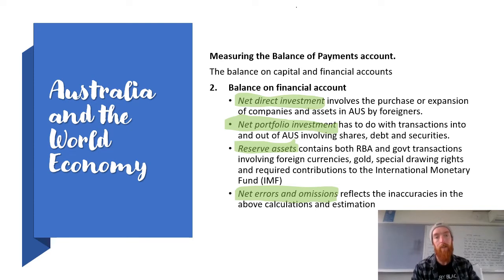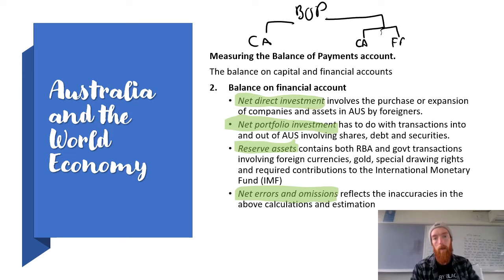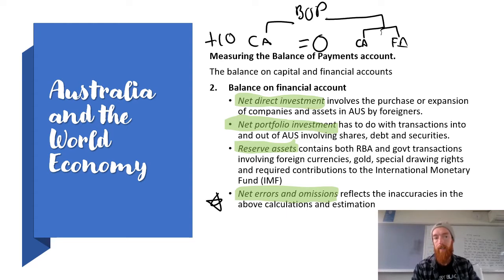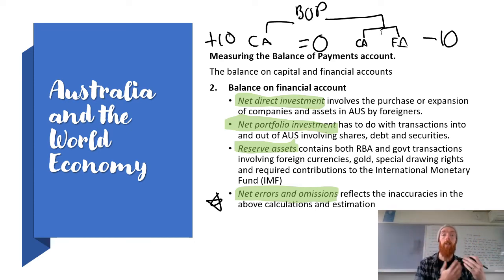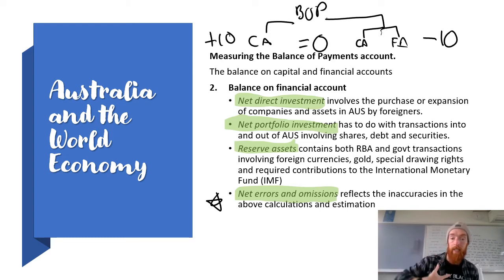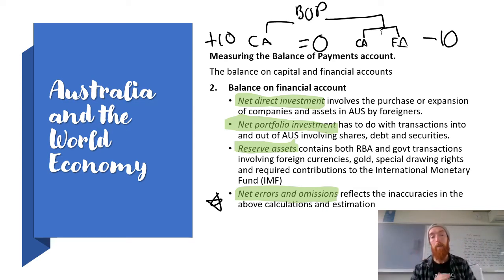The current account on one side must be exactly offset by the capital and financial account on the other — they always perfectly balance. So if the current account is positive ten, the other side must equal negative ten. Part of the reason is that many transactions on one side have a direct impact on the other. For example, if there is net direct investment coming into a country as a credit in the financial account, there will be corresponding debits in the current account's net primary incomes as dividends or profits are paid overseas.